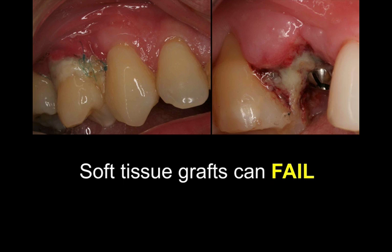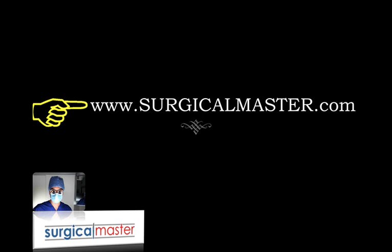Soft tissue grafts can fail, and sometimes dramatically — around teeth, around implants. It's important to stay composed, calm, and not get discouraged. In this video, I talked about the four reasons why soft tissue grafts can fail. This is part of surgical practice — it's part of life. Failure is the opposite end of success; without failure there's no definition of success. It happens to everybody. So for the next time one of your soft tissue grafts fails, I hope you stay positive. Find out what went wrong, make the necessary adjustments, and have surgical success.